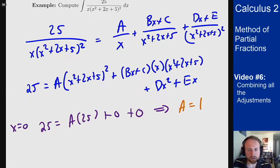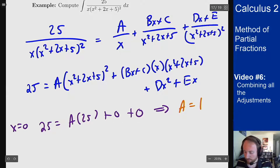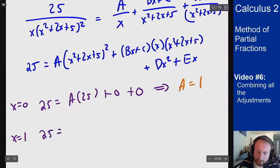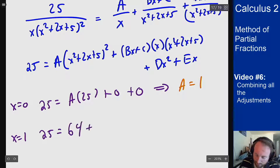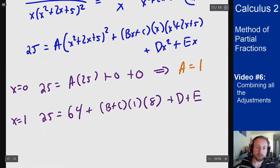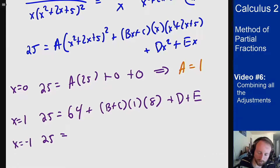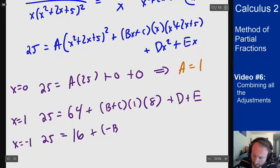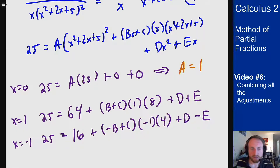From here there aren't any values that make terms go away, so let's plug in small numbers. Trying x = 1: 25 = 1·(8)² + (B + C)·1·8 + D + E, which simplifies to 25 = 64 + 8B + 8C + D + E. Trying x = −1: 25 = 1·(4)² + (−B + C)·(−1)·4 + D − E, giving 25 = 16 − 4B + 4C·(−1) + D − E.